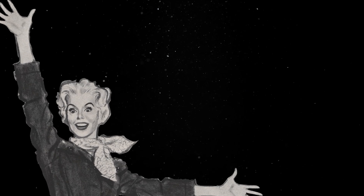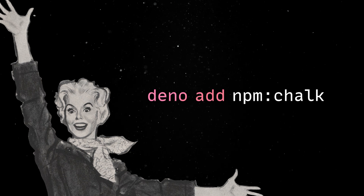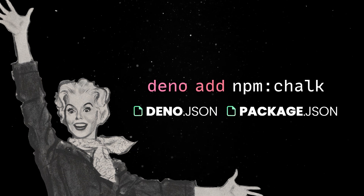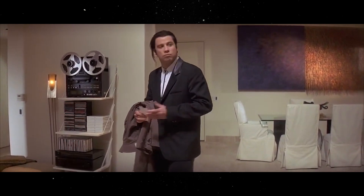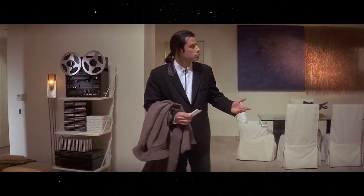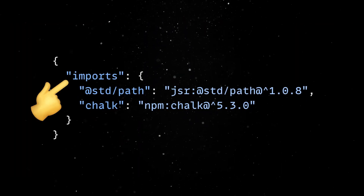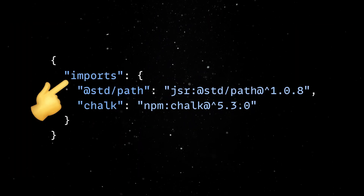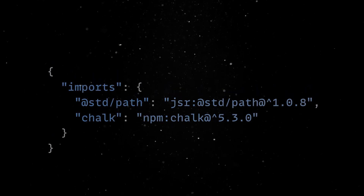The usage guide is really straightforward. You can use deno add to add dependencies directly to your deno.json or package.json files. Note that if no config files exist, Deno will create a deno.json with an import map. In projects with a package.json, npm modules will be added there instead.